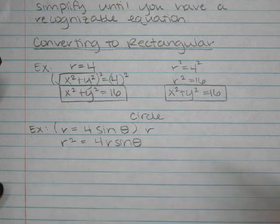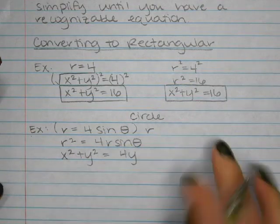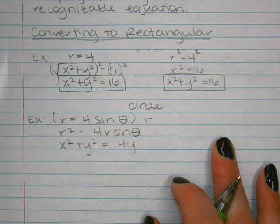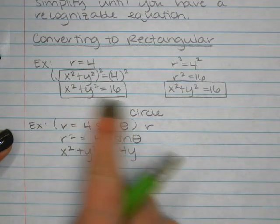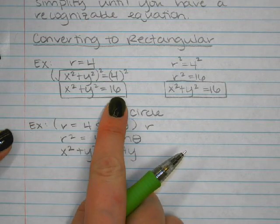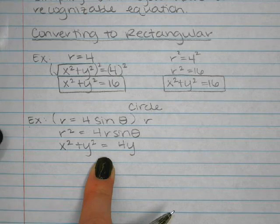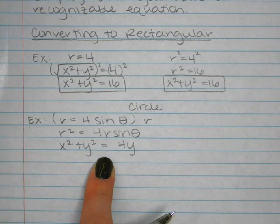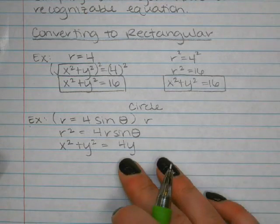So R² = 4R sinθ becomes x² + y² = 4y. This looks like what we worked with in conics — x² and y² together always means a circle. But it's not in standard form yet; it still needs completing the square. Depending on the instructions, you might leave it in general conic form (subtract 4y to equal 0), or complete the square for standard form.